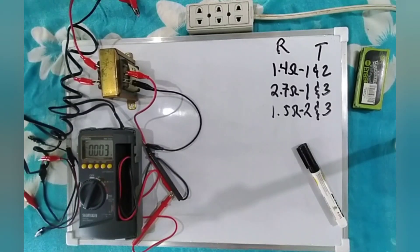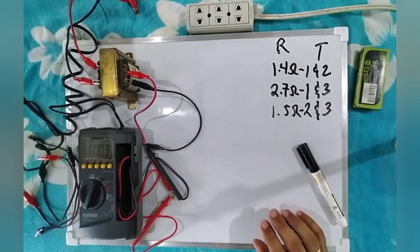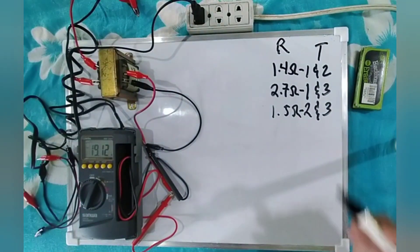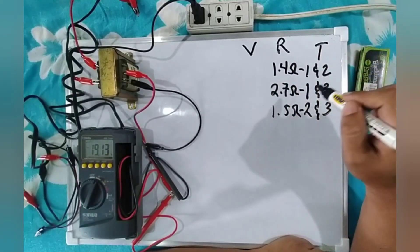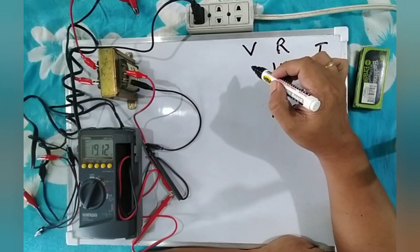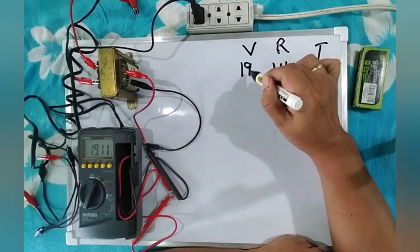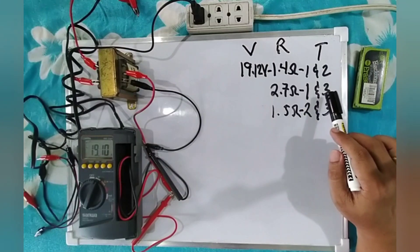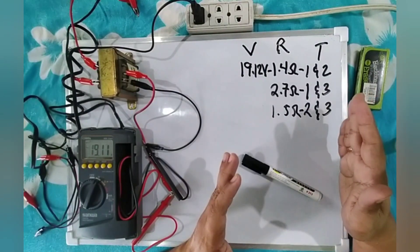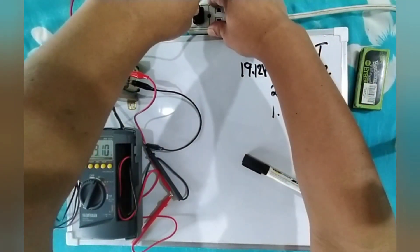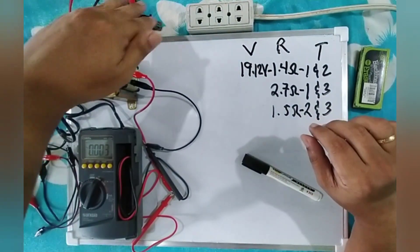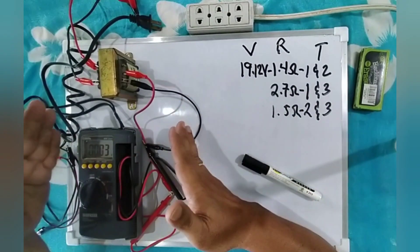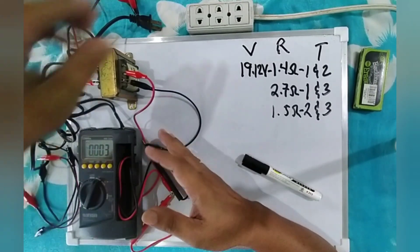Now it's already connected. We can plug in to the outlet to measure the voltage of terminal one and terminal two. The output voltage of terminal one and two is 19.12 volts. Next, we're going to measure the voltage of terminal one and terminal three. Before doing that, we need to unplug the connection from the outlet for our protection — any time we reconnect any circuit, we must unplug first.